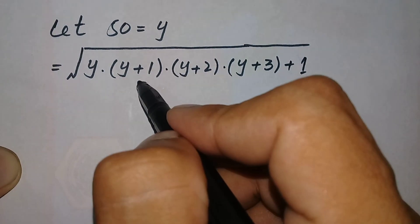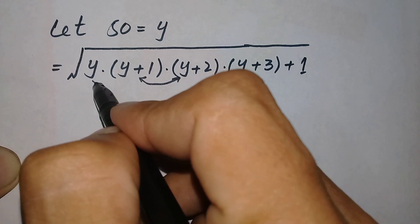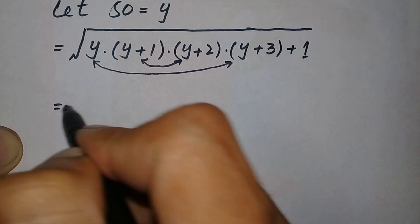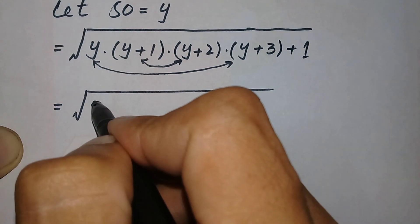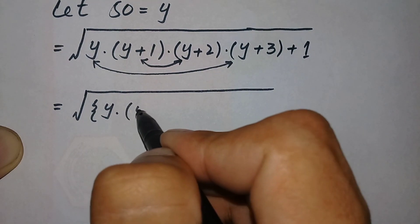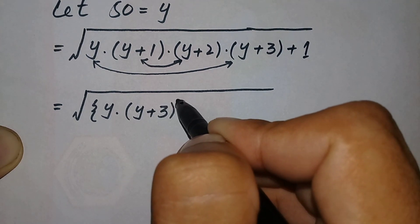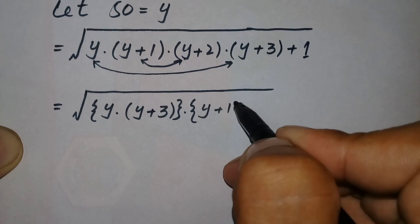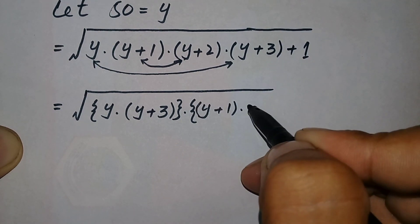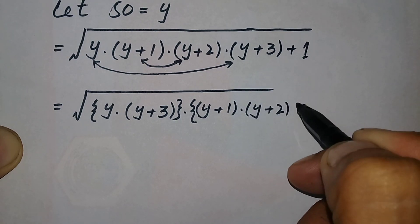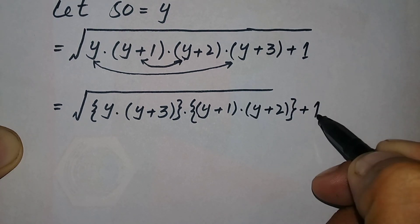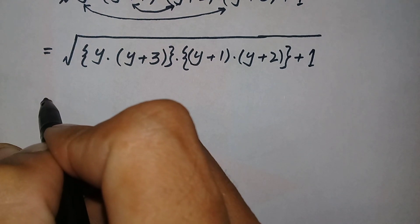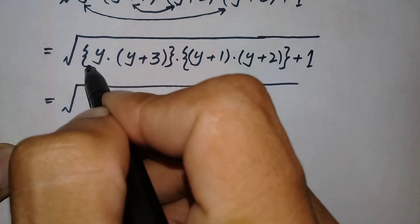In the next step, let us combine these expressions with each other — pairing the outer terms and inner terms — to get a product. It becomes the square root of (y times (y plus 3)) times ((y plus 1) times (y plus 2)) plus 1.